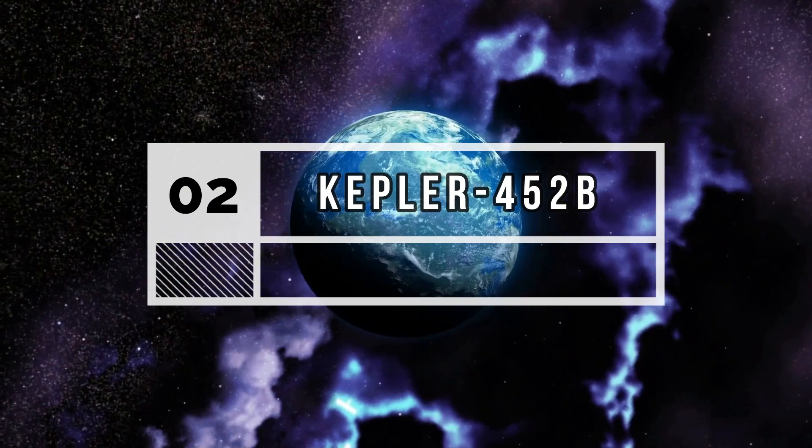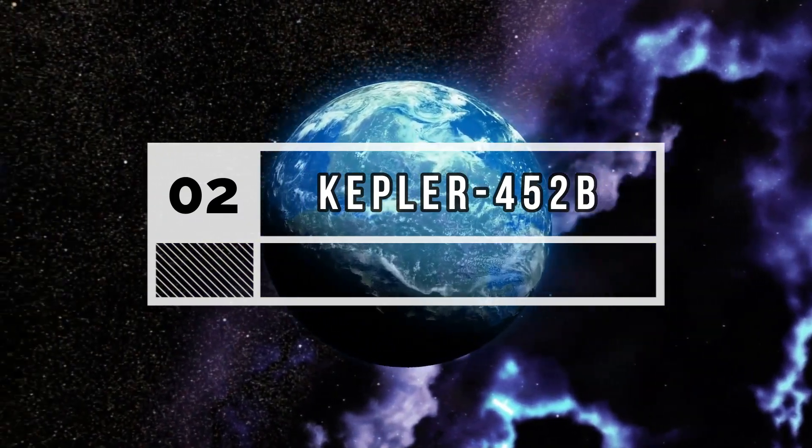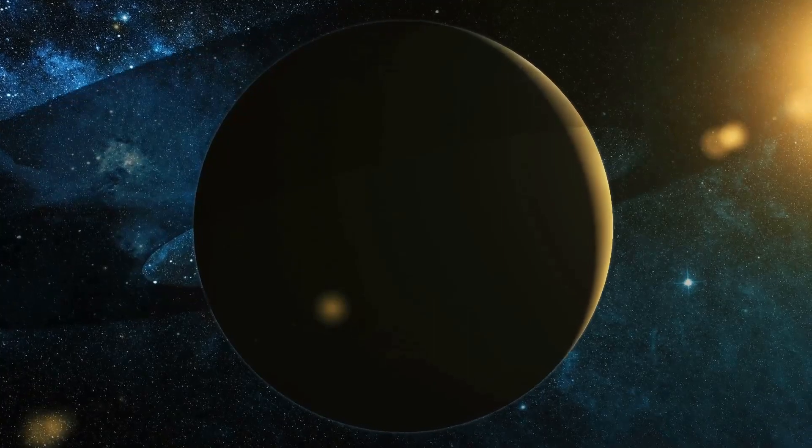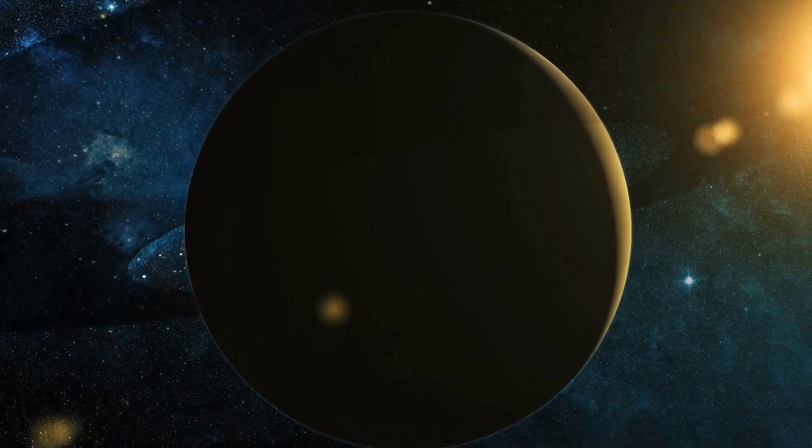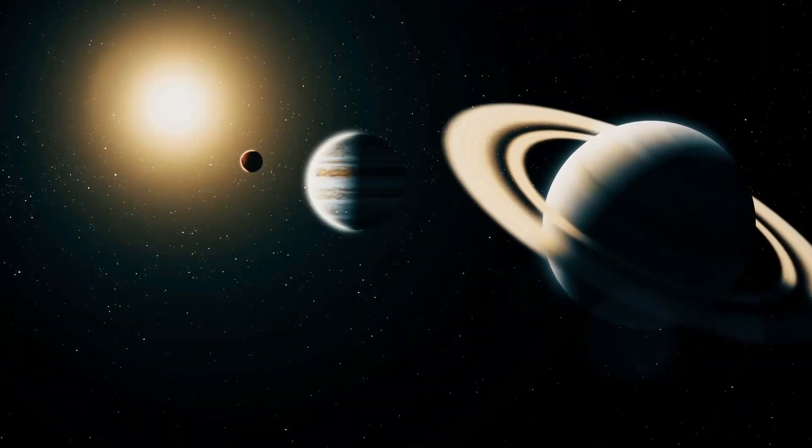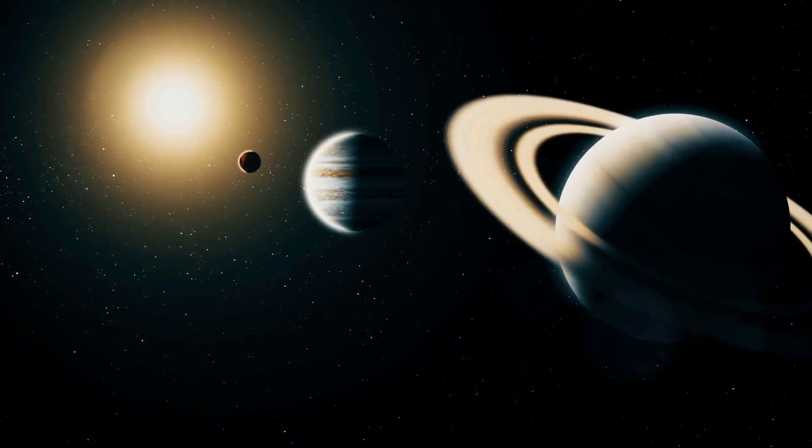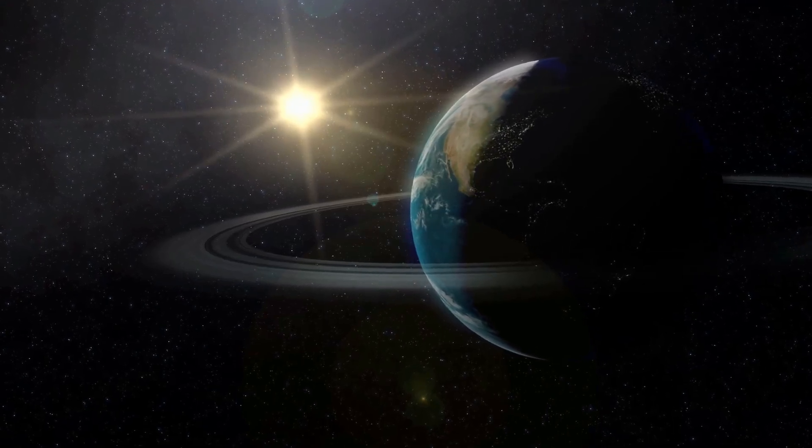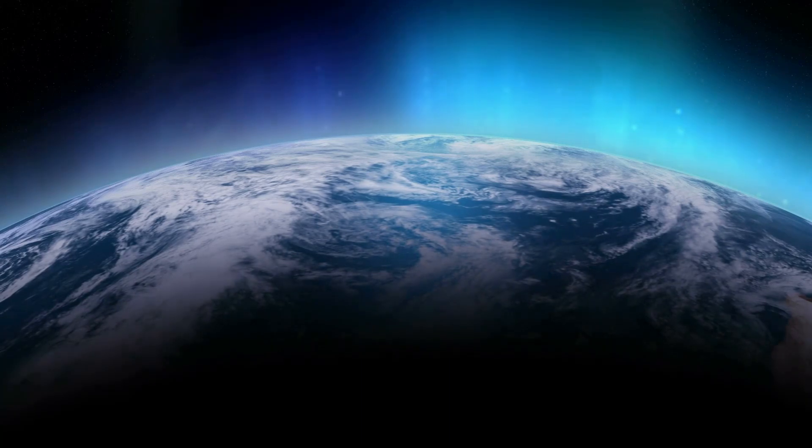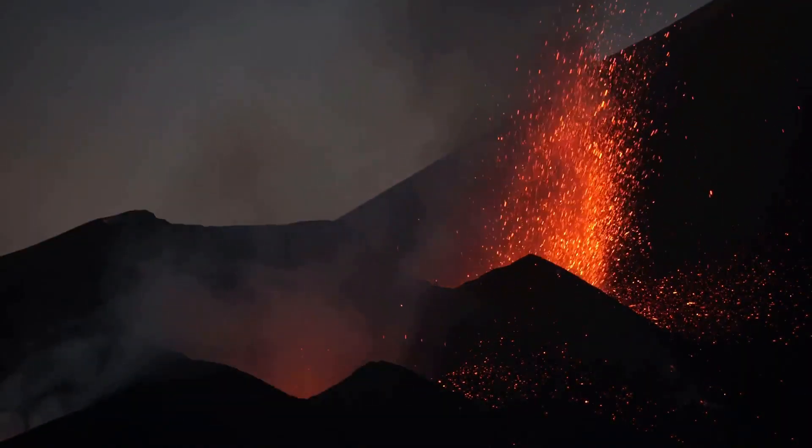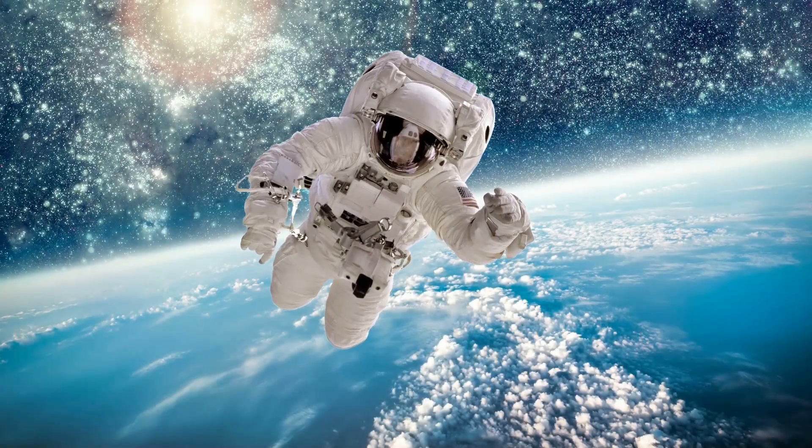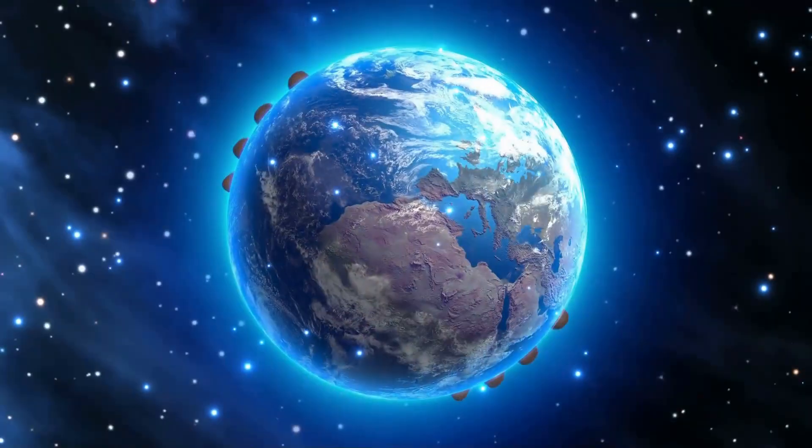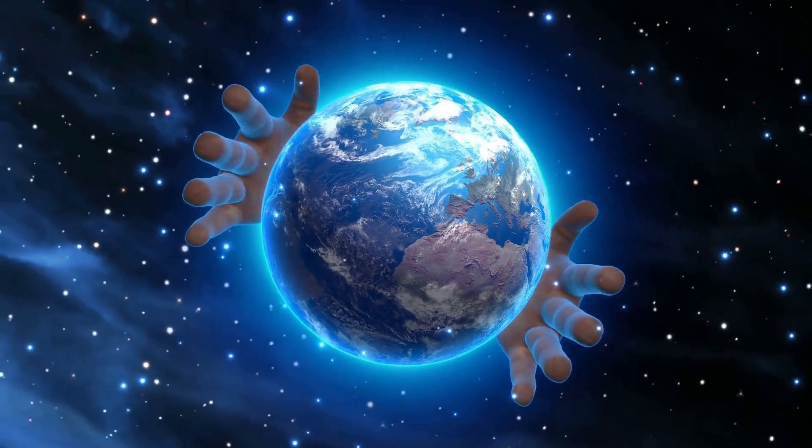Number 2: Kepler-452b. It is located in Cygnus constellation, also known as the Earth's older and bigger cousin. It is 60% larger than the Earth, but gets the same amount of heat from its star. It orbits around its star in 385 days, which means that it has a 385 day year. Kepler-452b has a thicker atmosphere than that of Earth, and also contains active volcanoes. Gravity effect on this planet is about 2 times as that on Earth. It is also called the Super-Earth due to its similarities with the Earth.